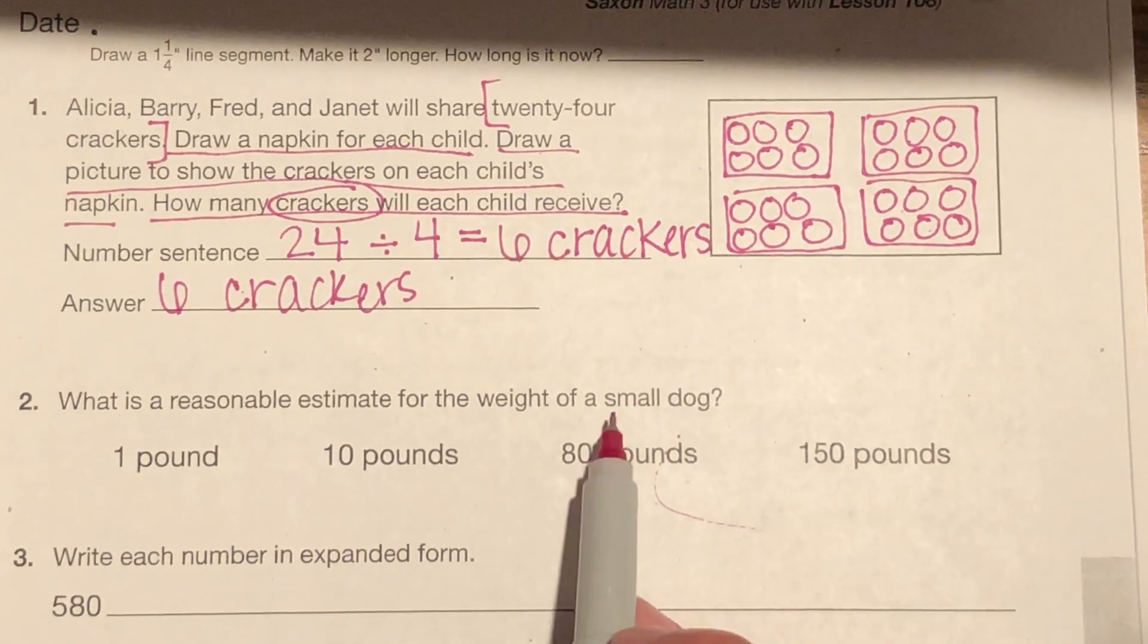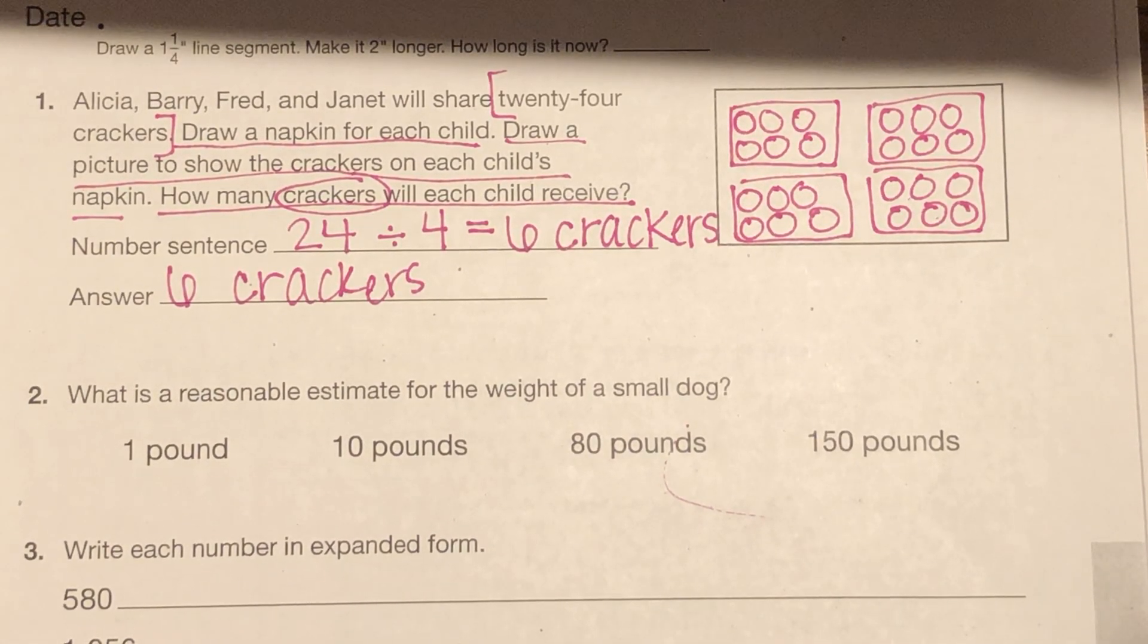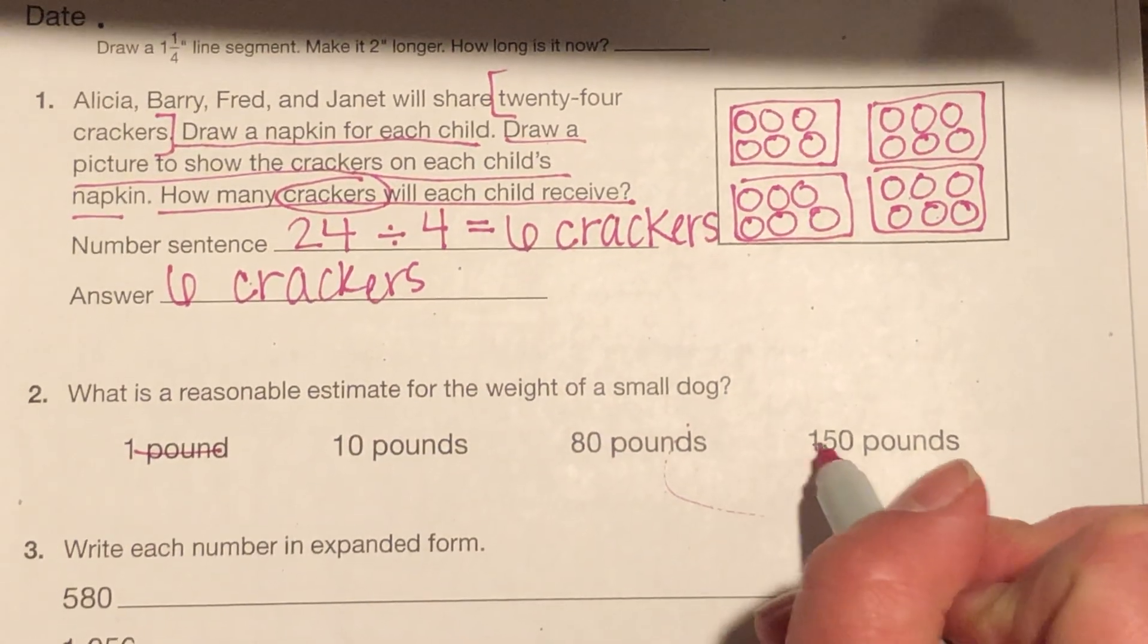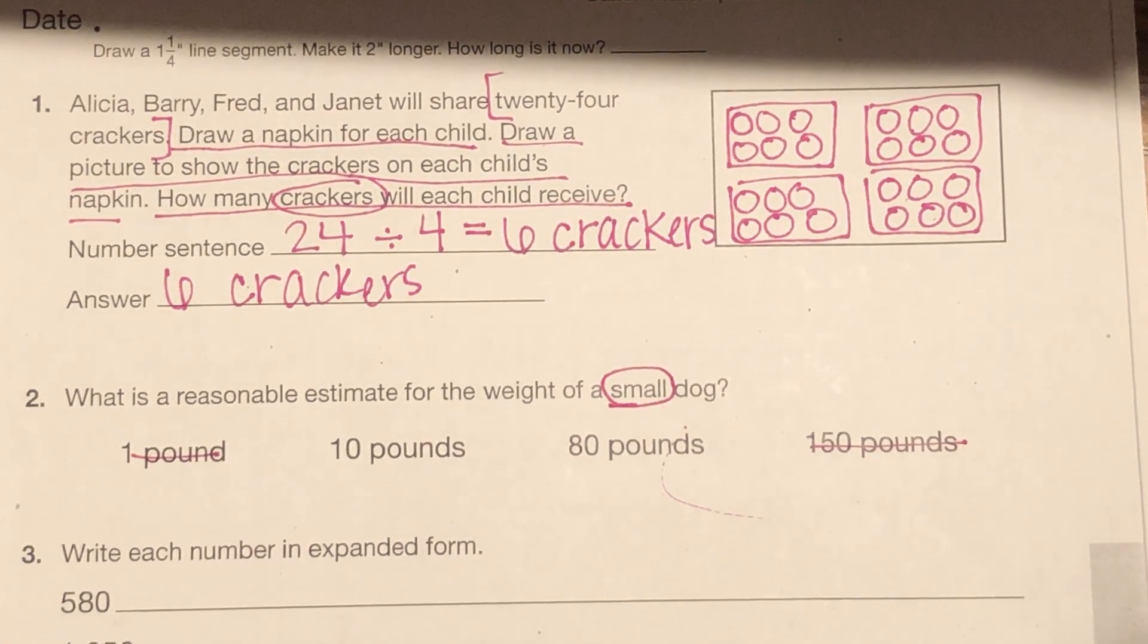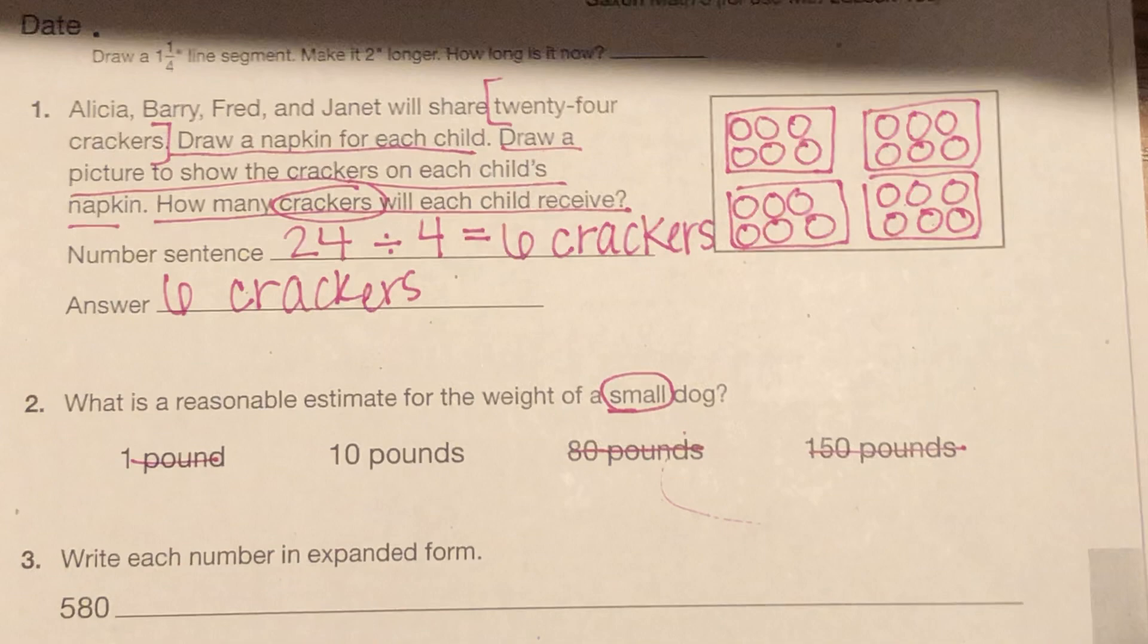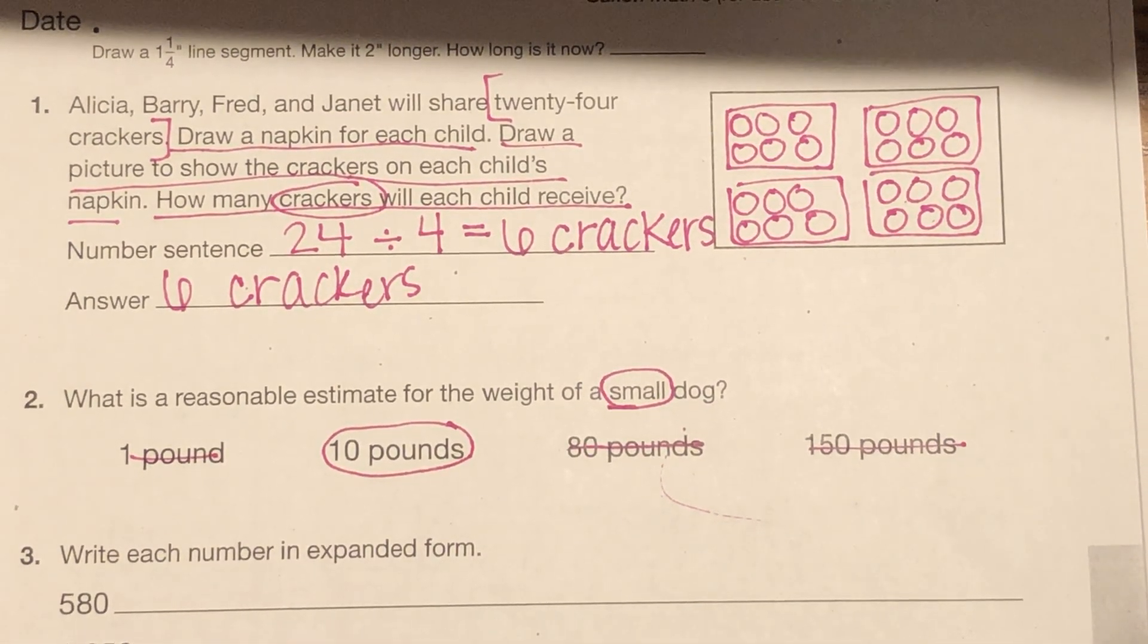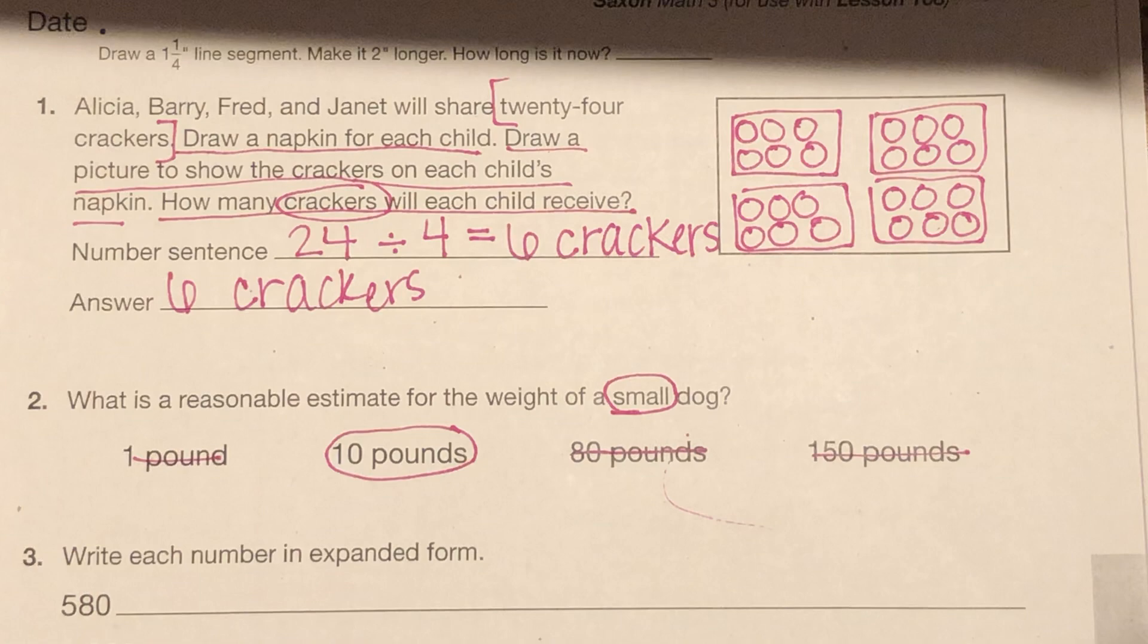So if we're thinking of the weight of a small dog, which of these do you think is a good estimate? I think 1 pound would be too small. I think 150 pounds would be too big. That is not a small dog. Remember, it says small. There might be a dog that is 150 pounds, but that is not a small dog. I would say a dog that's 80 pounds, also not a small dog. 10 pounds would be a reasonable estimate for a small dog. Like I said, Holly was 7 pounds, and I would round up to 10. That's what you would do with that number.